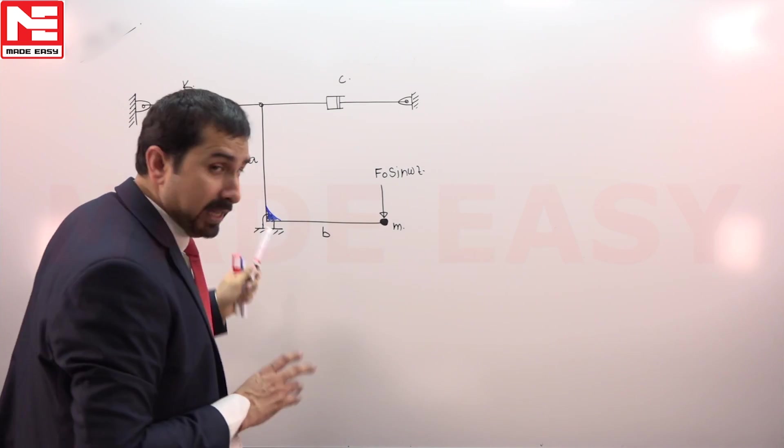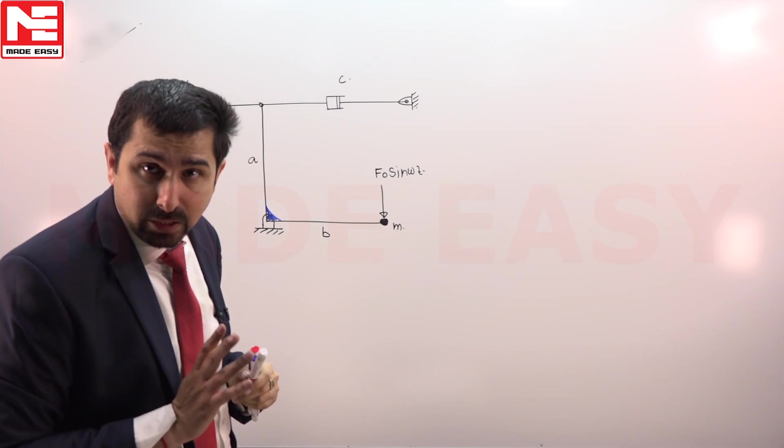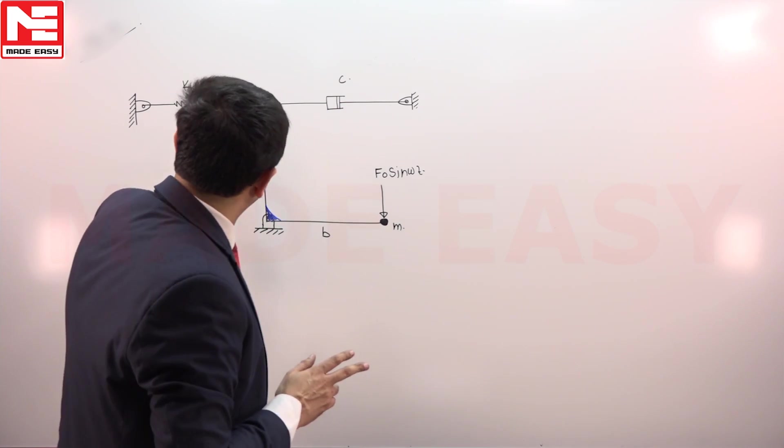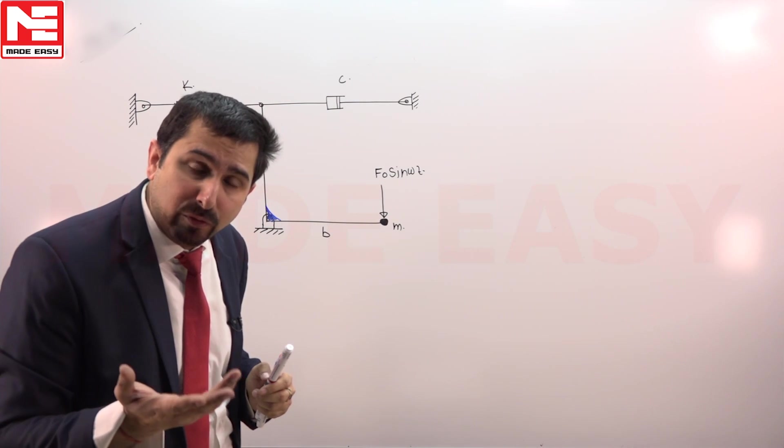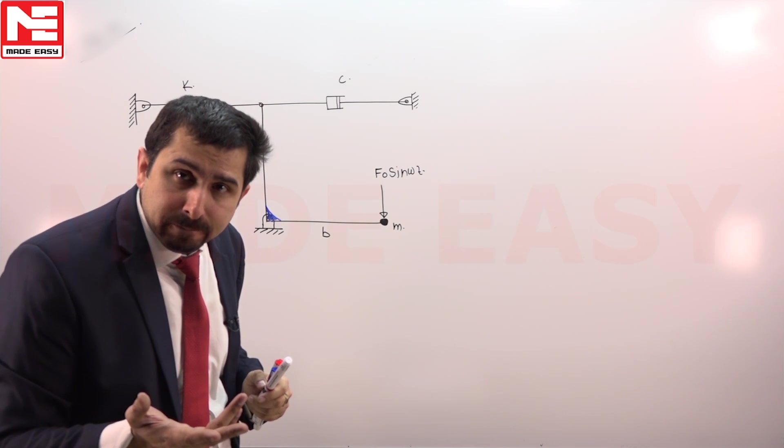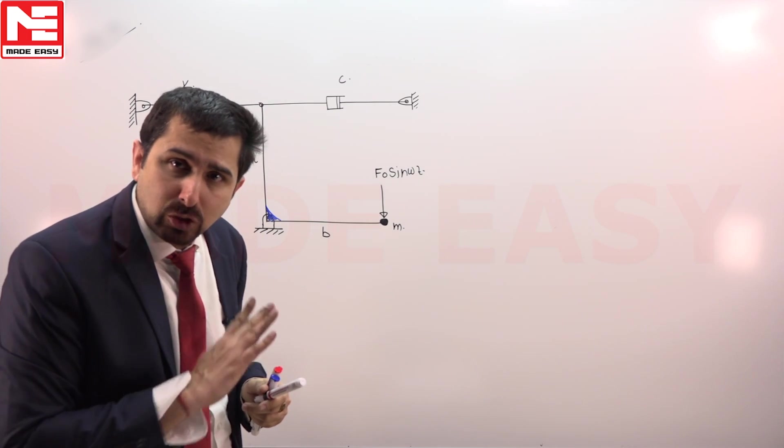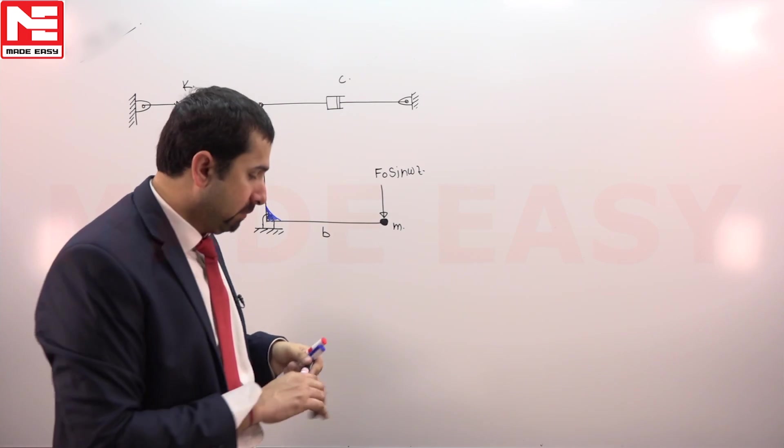So Mg torque will be balanced by the k x i torque. Therefore, the Mg torque will not be considered here, because of this force Mg already this spring will be little bit displaced before the mean position. Mg torque will be totally balanced, so we do not have to take the Mg torque.